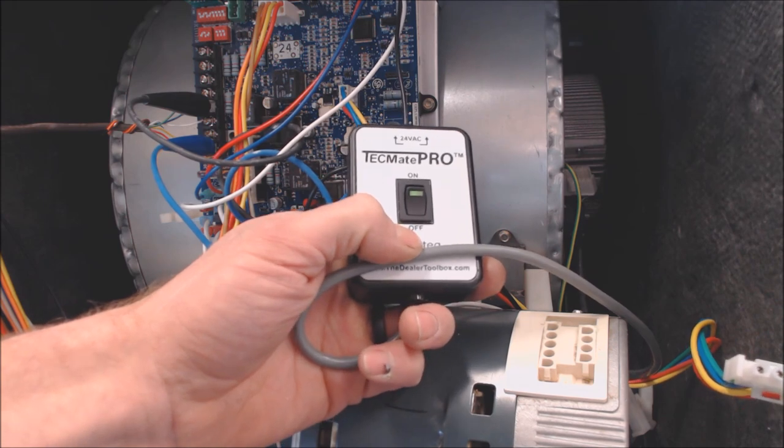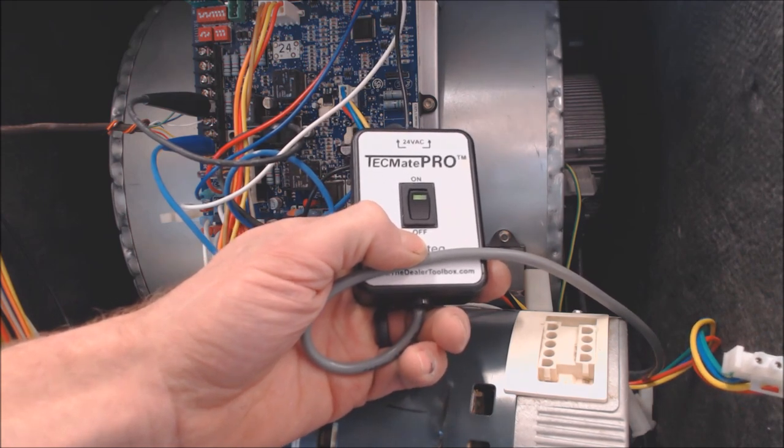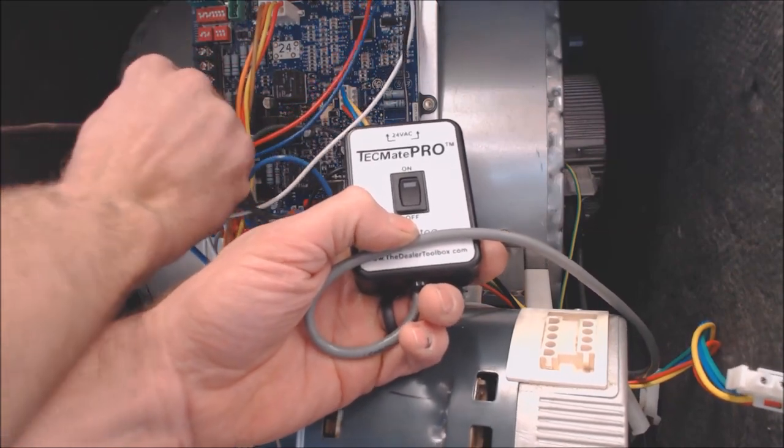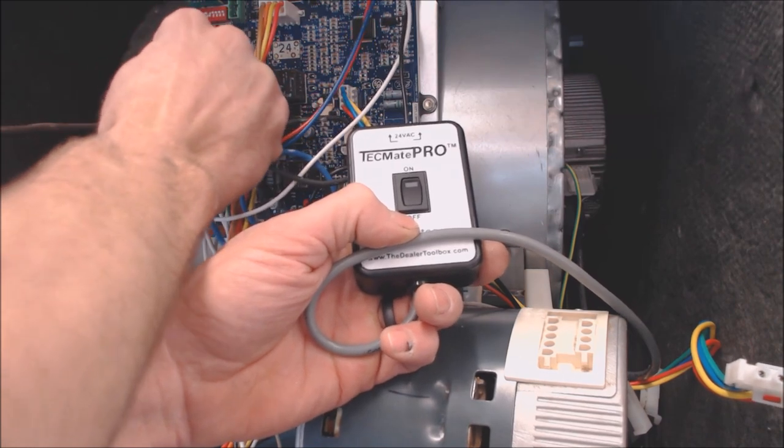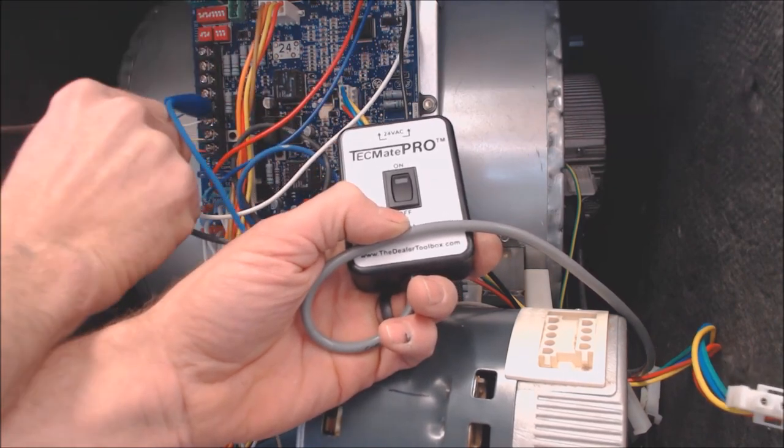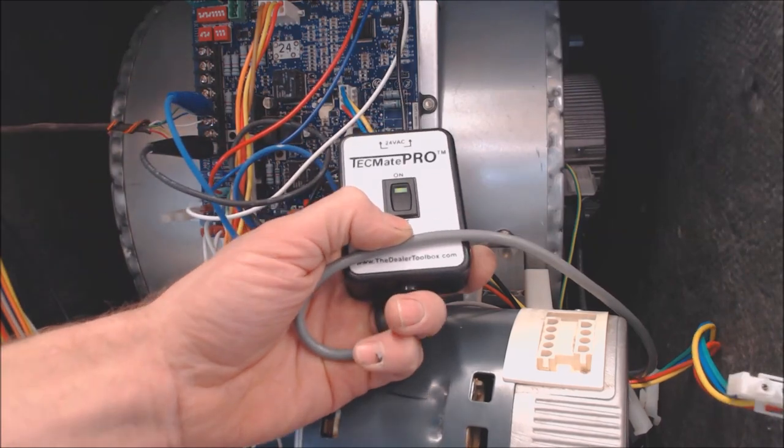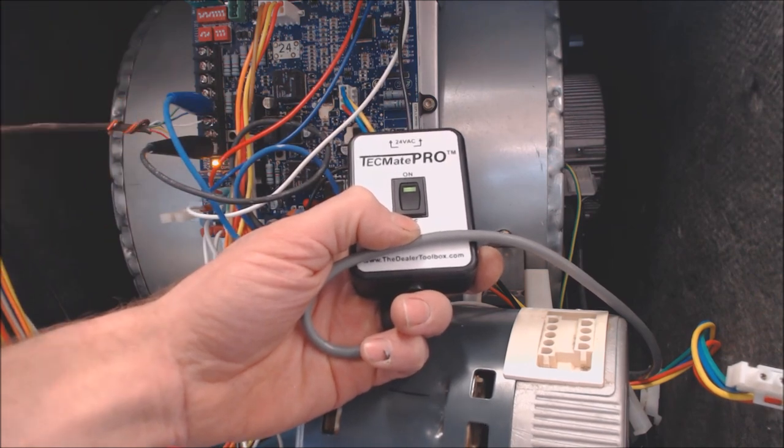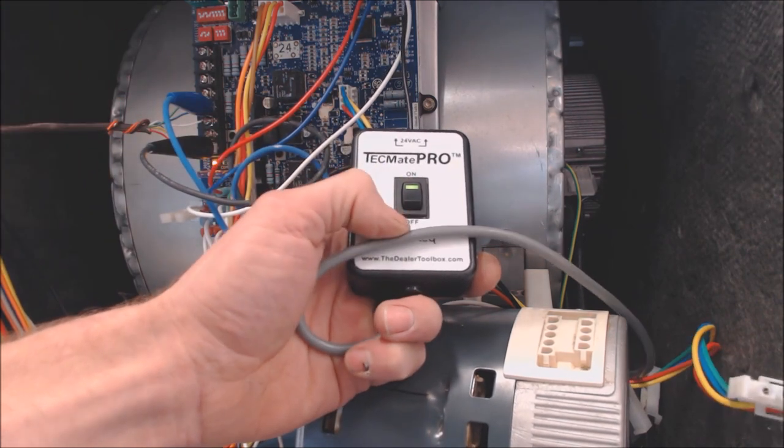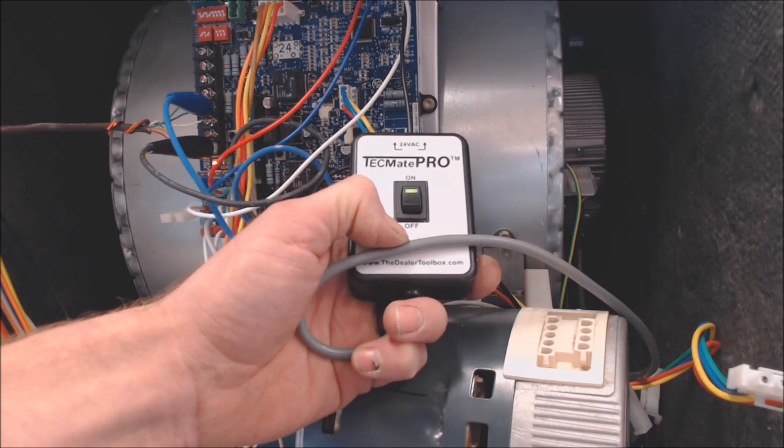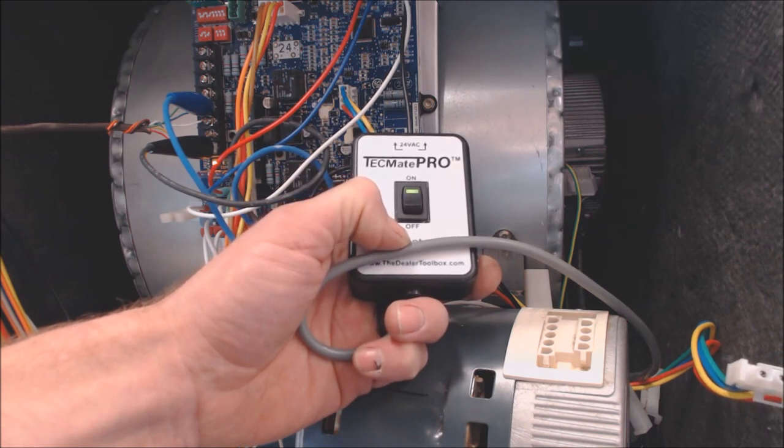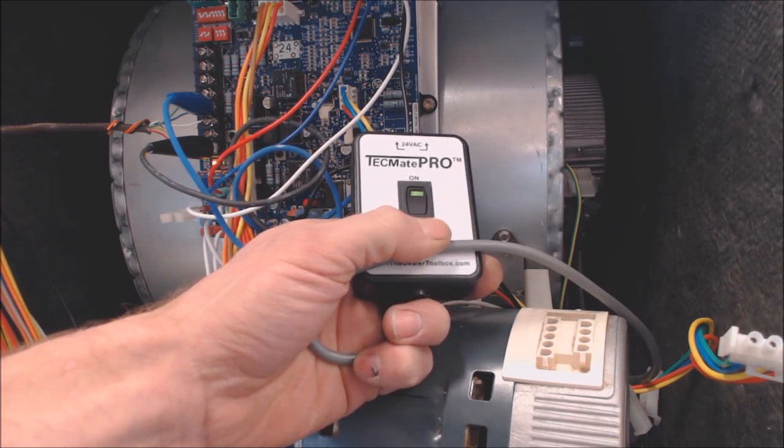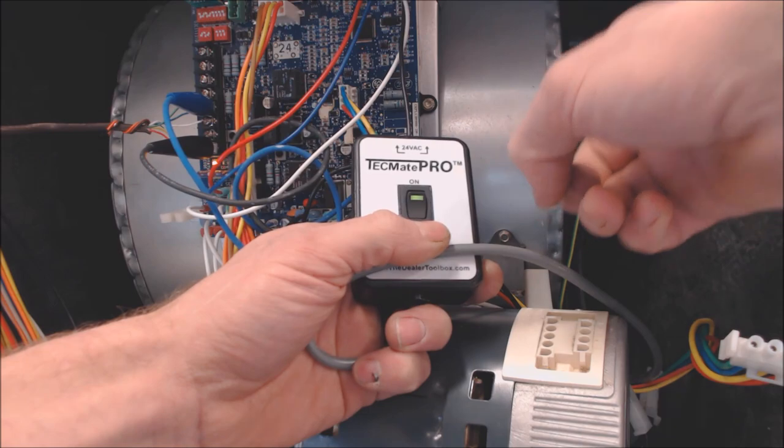All right, so we've effectively checked the variable speed blower motor. We're going to now turn the power off. I'm going to switch these two connections. We're now going to turn the power back on again. I flip these two between common and power. And now I'm going to turn this on. And it's going to test the variable speed blower motor the same way.